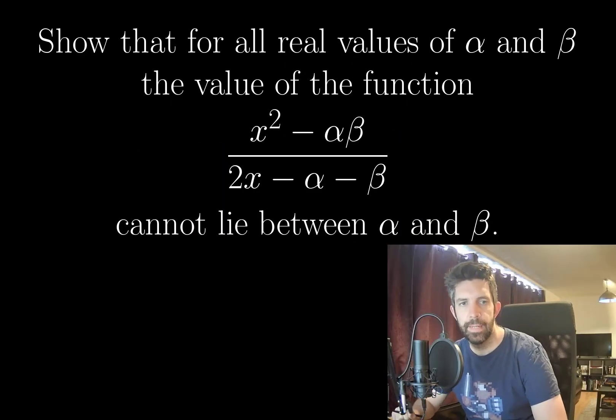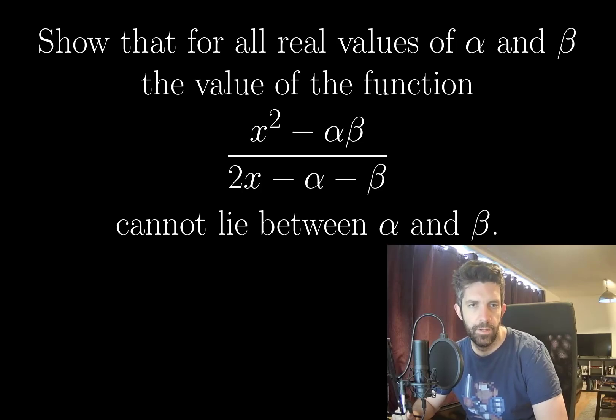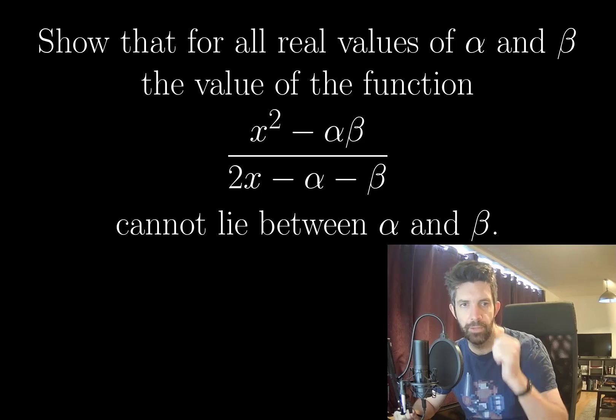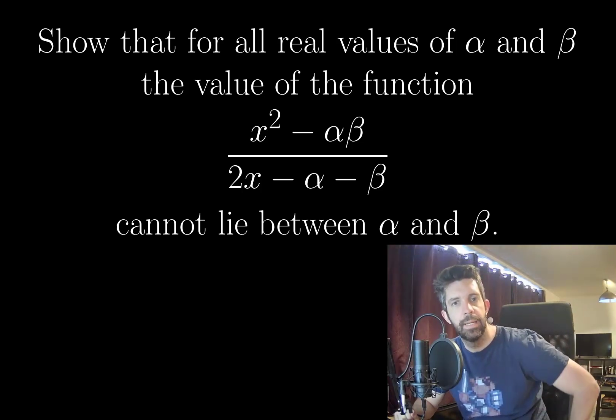Today's question comes from a viewer and it says show that for all real values of alpha and beta, the value of the function x squared minus alpha beta divided by 2x minus alpha minus beta cannot lie between alpha and beta.